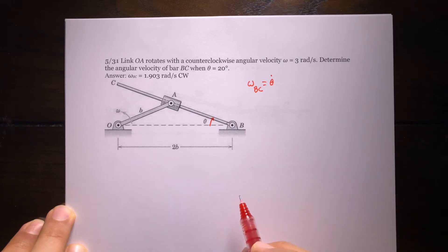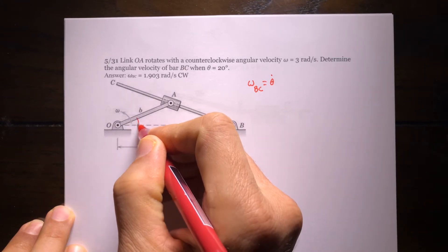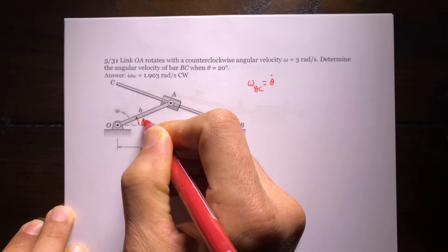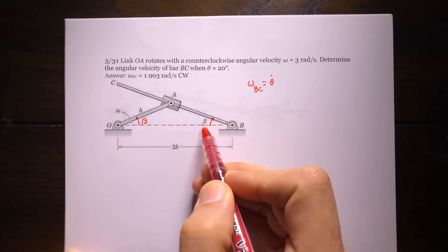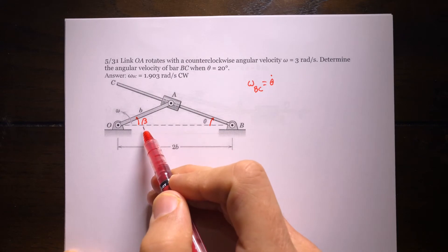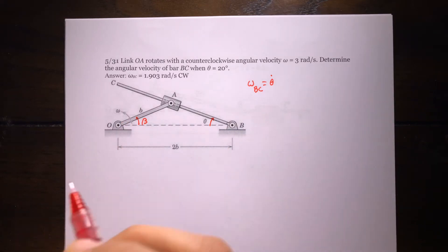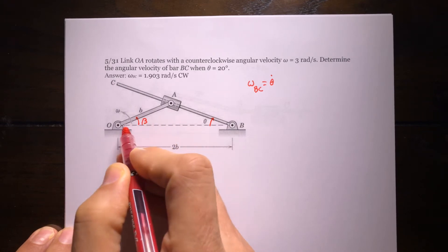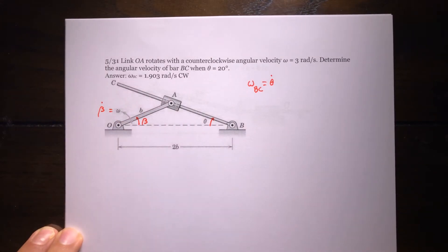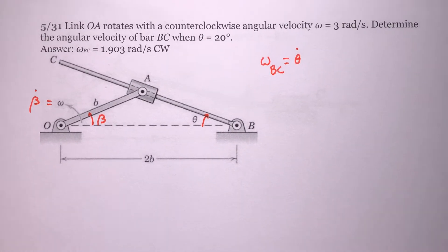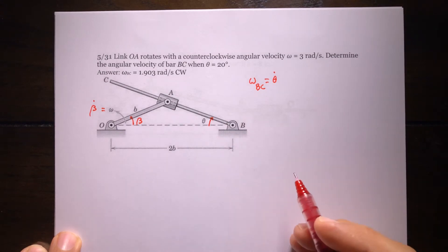How can we approach this problem? We need to find a relationship between this angle — call it beta — and theta. If I relate beta to theta and take the derivative of that equation, I can connect beta-dot (which is omega) to theta-dot. Keep in mind that if I call this angle beta, then the angular velocity of OA is beta-dot, which equals omega.